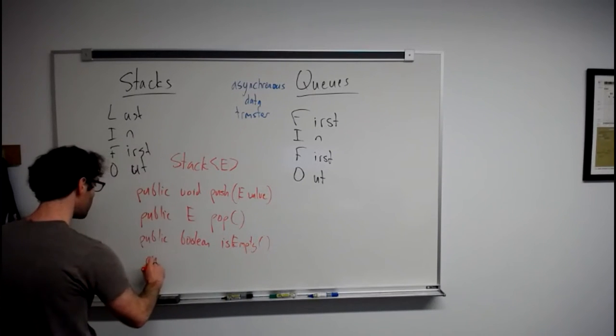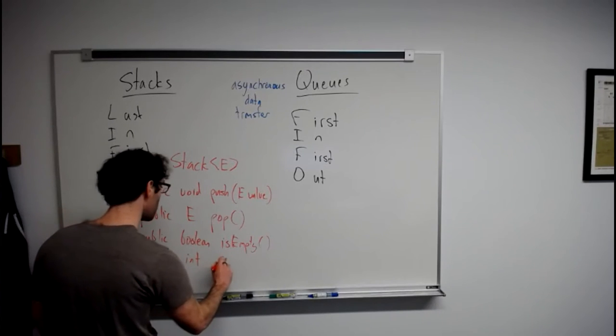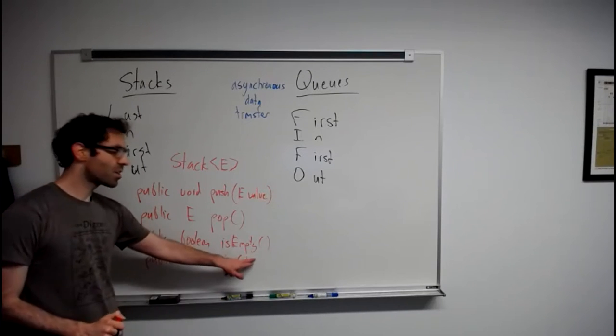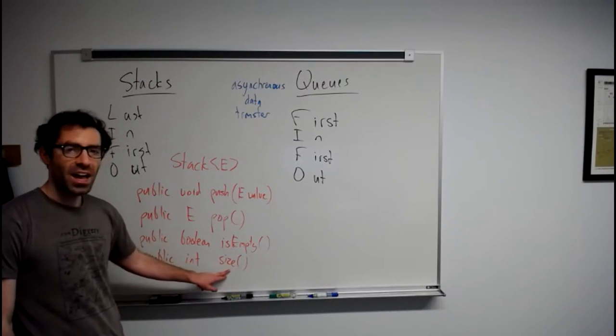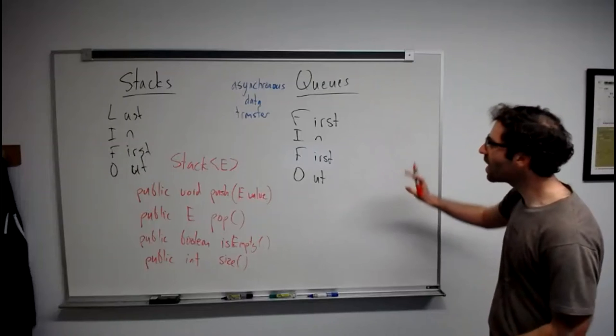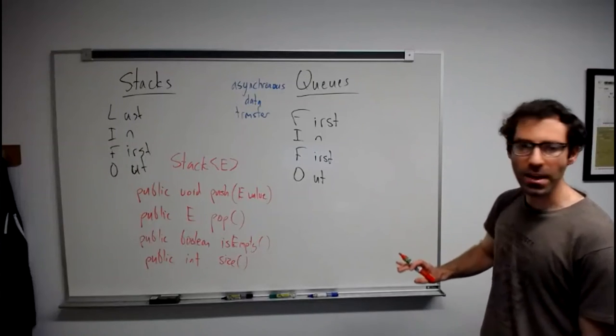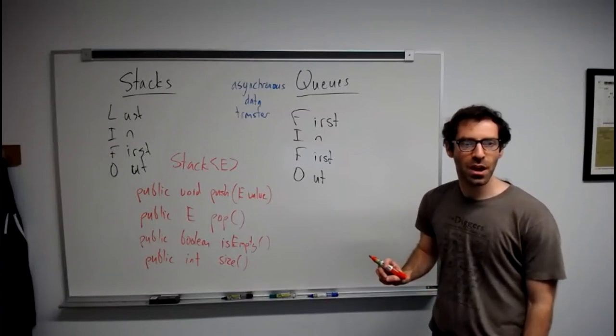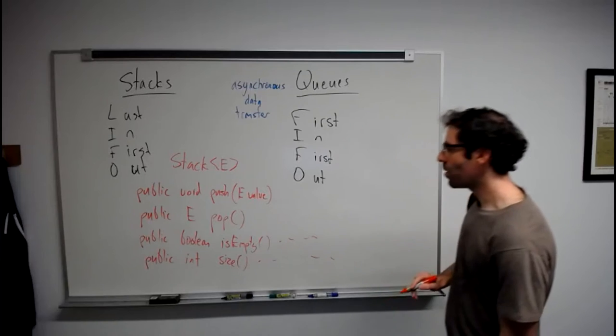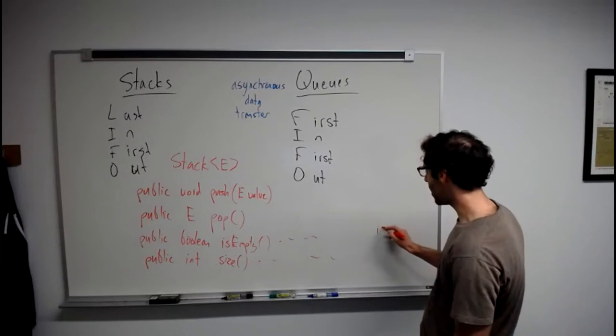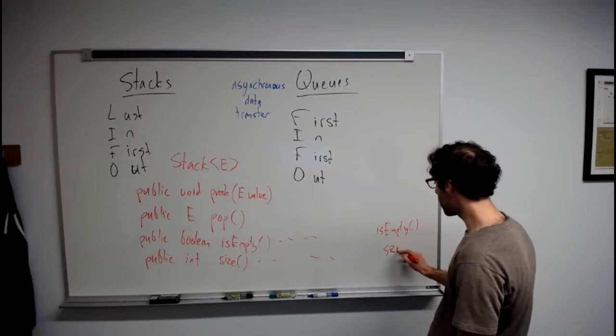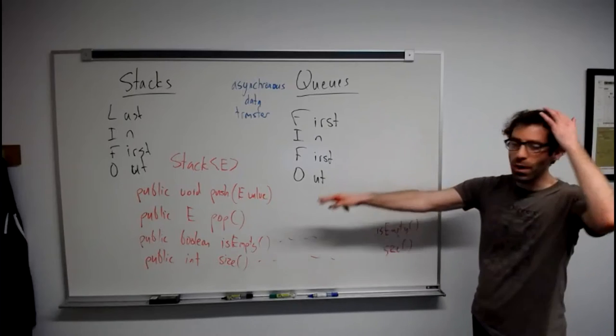We'll also have is empty and size. We're going to ask is the stack empty, true or false, and also find out how many objects are currently in the stack. Queues will have a similar set of operations, they will have different names. Is empty and size will actually be exactly the same for queue as for a stack.